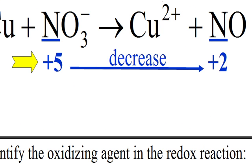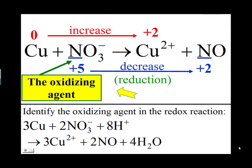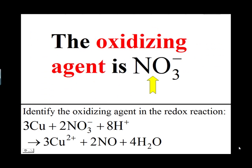A decrease in oxidation number is called reduction. And the species undergoing reduction is the oxidizing agent, which in this case is NO3-. So, the oxidizing agent in this equation is NO3-.